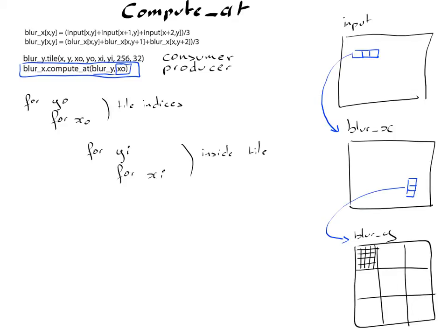So the first thing we need to do is to figure out where to insert the creation of blur x data in the nested loop hierarchy of blur y. And here, we have to put it at the level x0 right here.